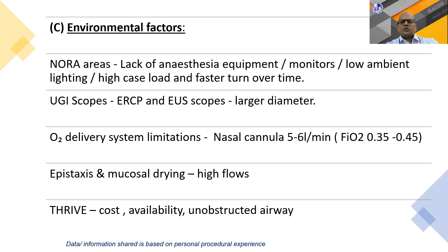If a patient goes into apnea or has airway obstruction, none of us wants to ask the surgeon to remove the scope—especially after reaching a crucial position. Our options to supplement a higher FiO2 or maintain airway patency are limited. Increasing nasal cannula flow is not always foolproof and risks mucosal drying and epistaxis. THRIVE offers humidified oxygen and acts like a ventilatory exchange, but cost, availability, and the requirement for an unobstructed airway are disadvantages. Procedural oxygenation masks give higher FiO2 but do nothing for an obstructed airway.